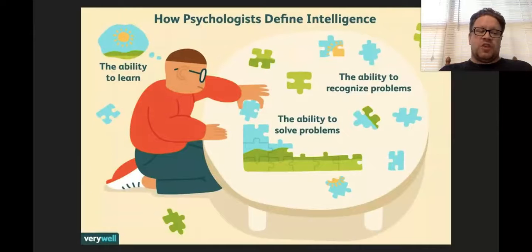Intelligence is the ability to learn from one's experiences, acquire knowledge, and use resources effectively in adapting to new solutions or solving problems. Yet there have been several different psychological theories about intelligence.